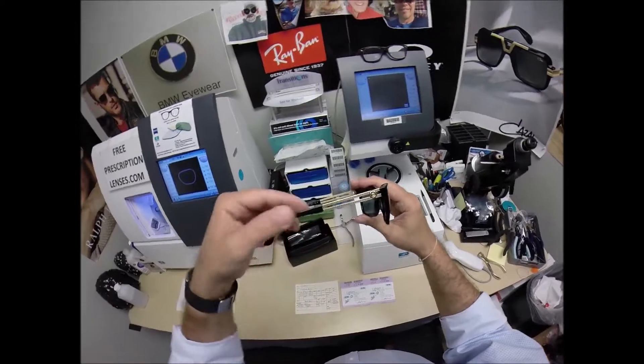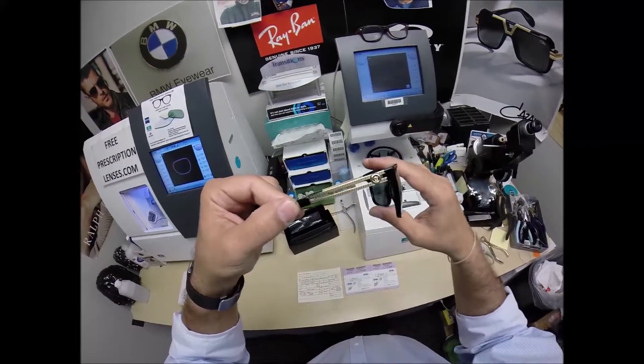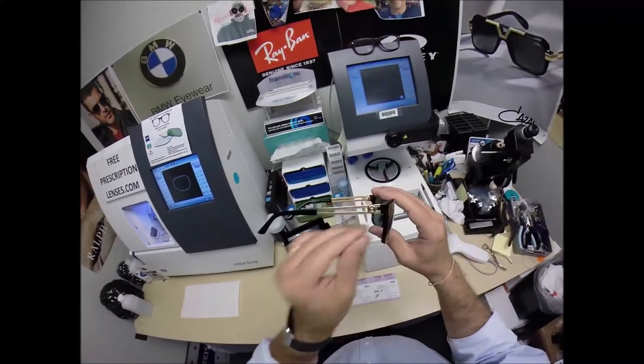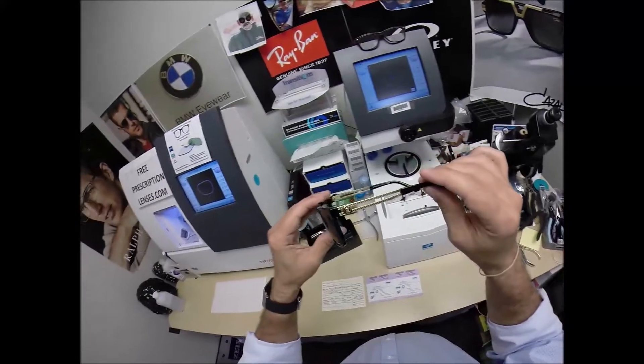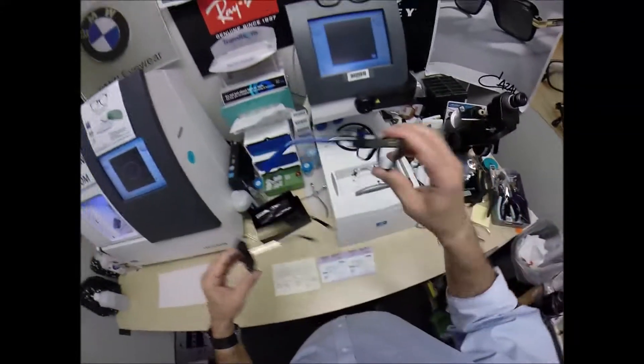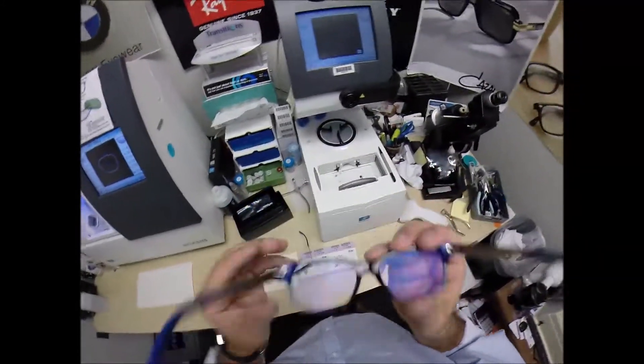This has the Medusa on each temple, and the Greco engravings. Those are the two emblems combined onto one frame. The Versaces either have the Greco pattern or the Medusa. This has it on both temples. Mine only has the Medusa there. So, that's pretty cool.